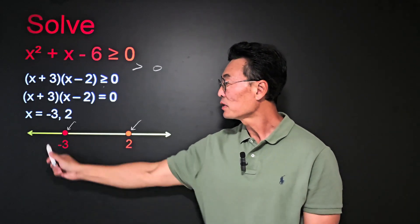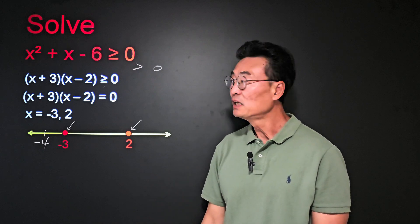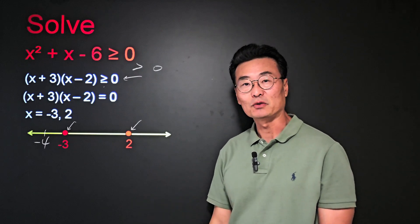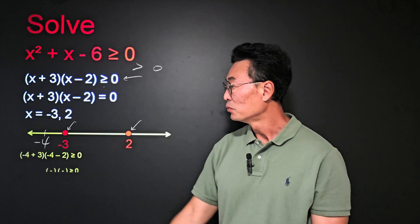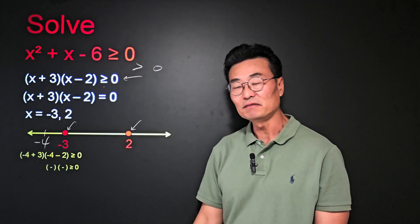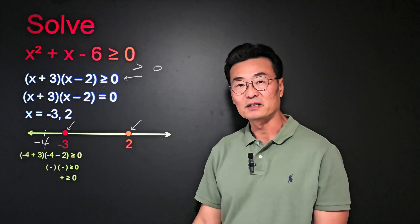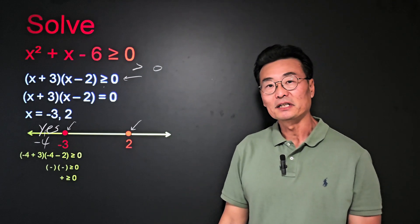Next, I like to go ahead and pick a number on the left side of negative 3, such as negative 4, and plug it in to this factor form of the inequality, where negative 4 plus 3 will be negative, and negative 4 minus 2 will be negative, and negative times negative is positive, which is greater than 0. So I'm going to put yes on the left side of negative 3.